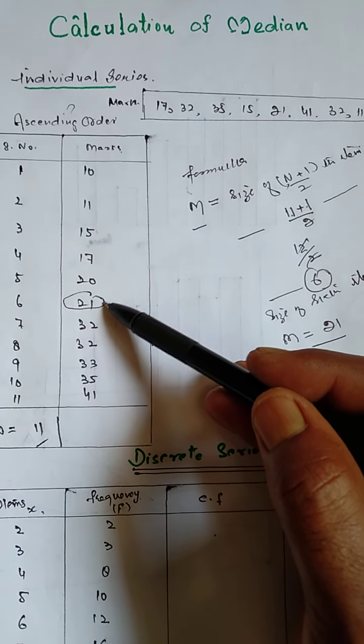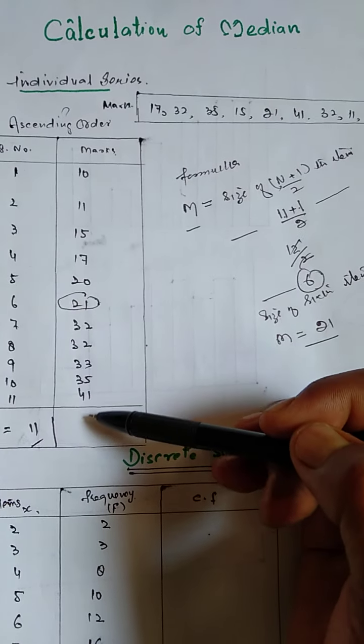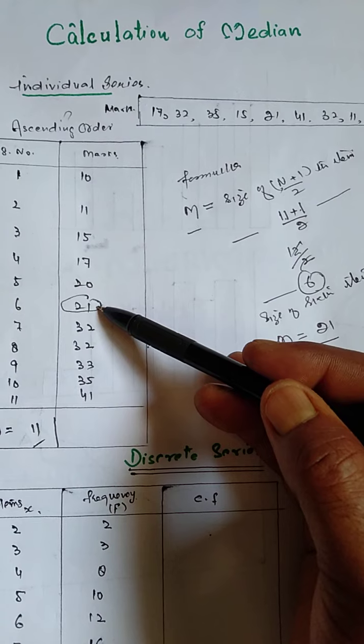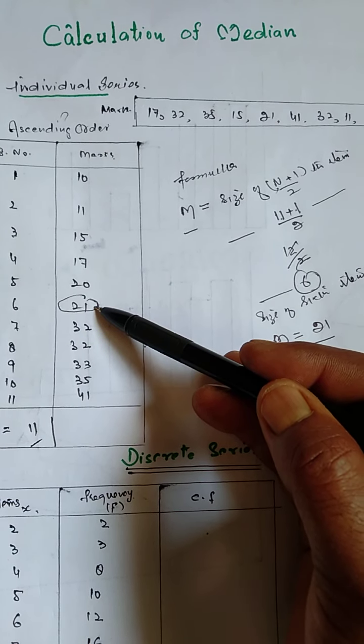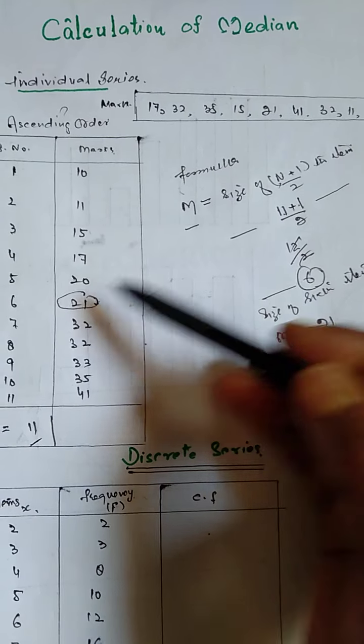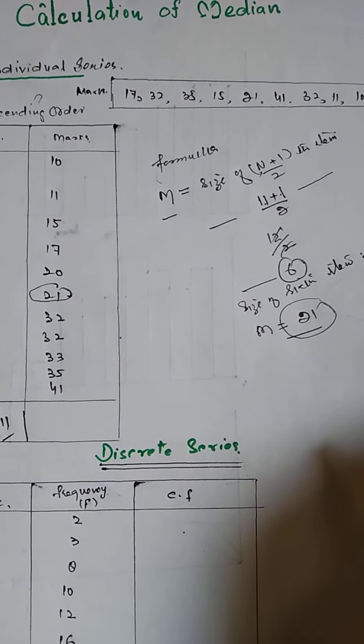Therefore, our median will be M equals 21. If we do inspection also, which is the middle one, it is 21. It has 50% above it, half above it and half below it. So it's in the middle. The middle one is the median, as the inspection method says.